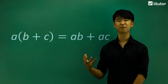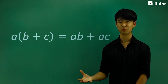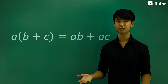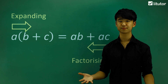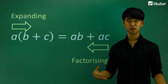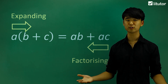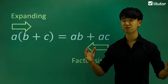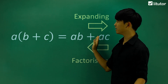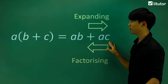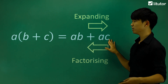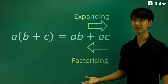Hopefully by now we should be familiar about expanding expressions. I'm going to introduce a new term called factorizing. Factorizing is essentially the opposite to expanding. Expanding is when we get rid of brackets and expand into all these little terms, so going from this form and multiplying it all out into this expanded form. The opposite of that is factorizing.